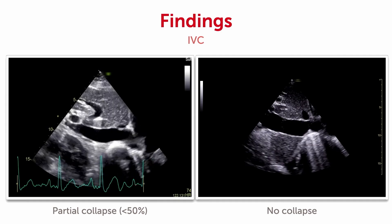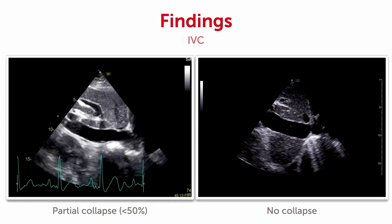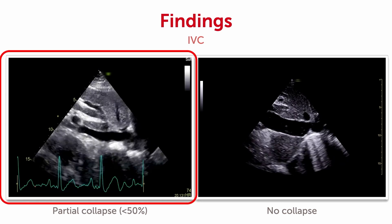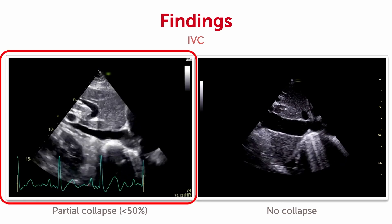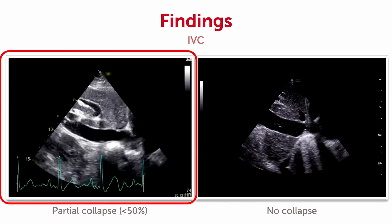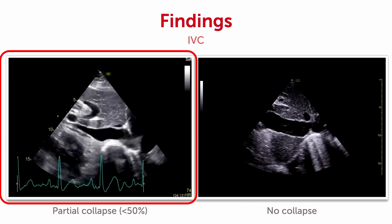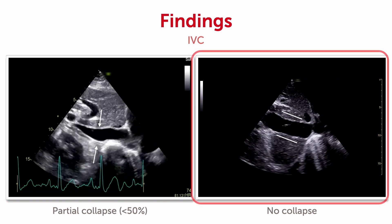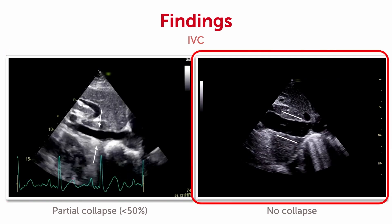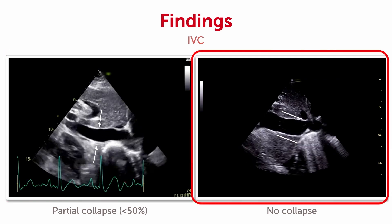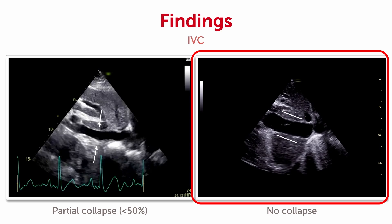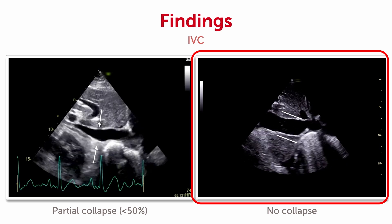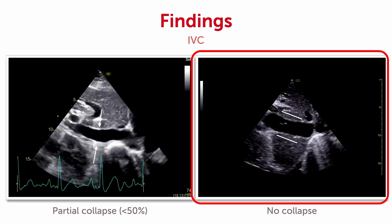You can now see two examples. On the left hand side, a normal IVC which decreases in size during inspiration. On the right hand side, we see an IVC that does not decrease in size and which is enlarged. In the right situation you would have increased right atrial pressures.